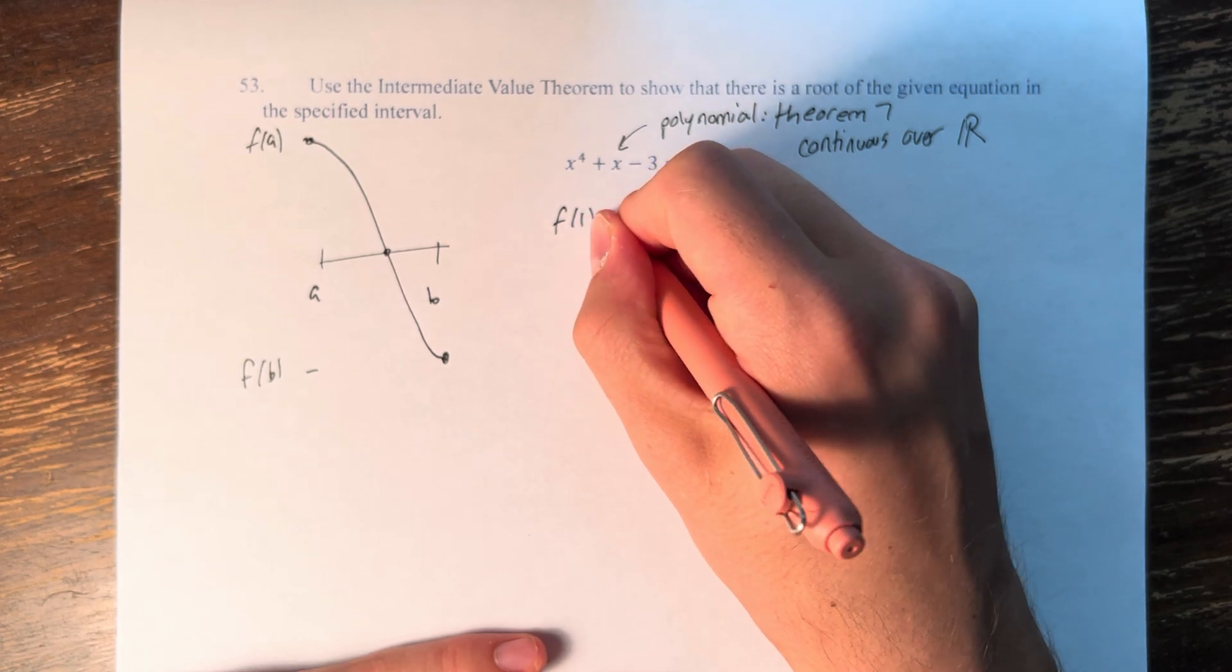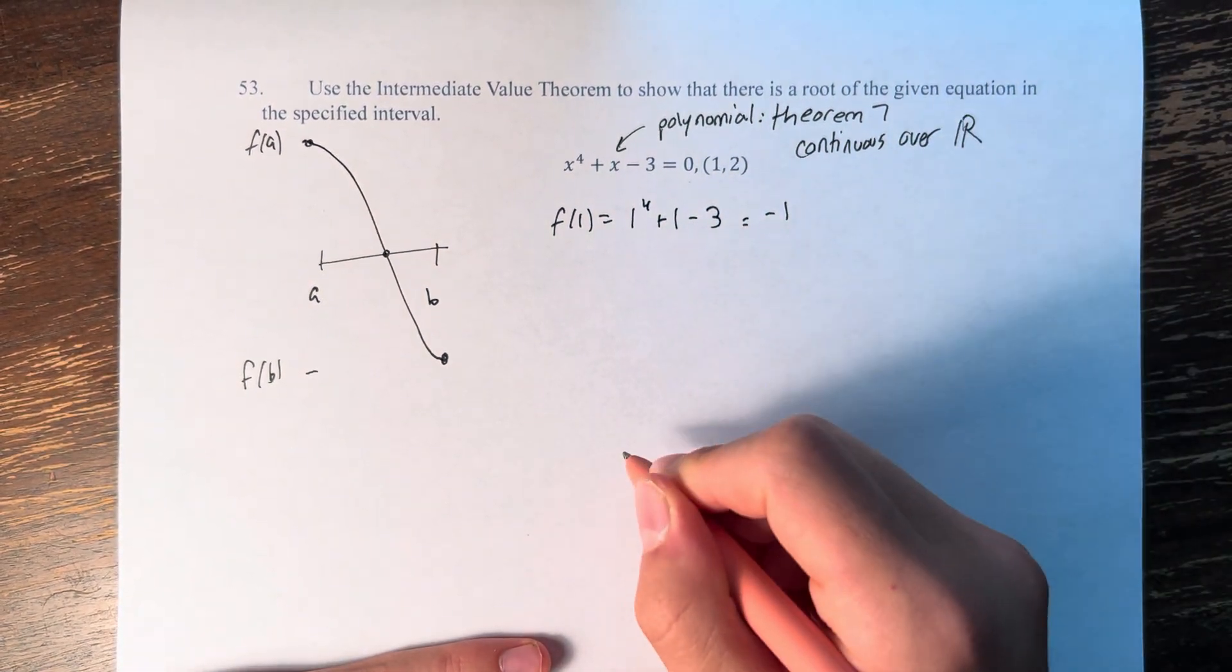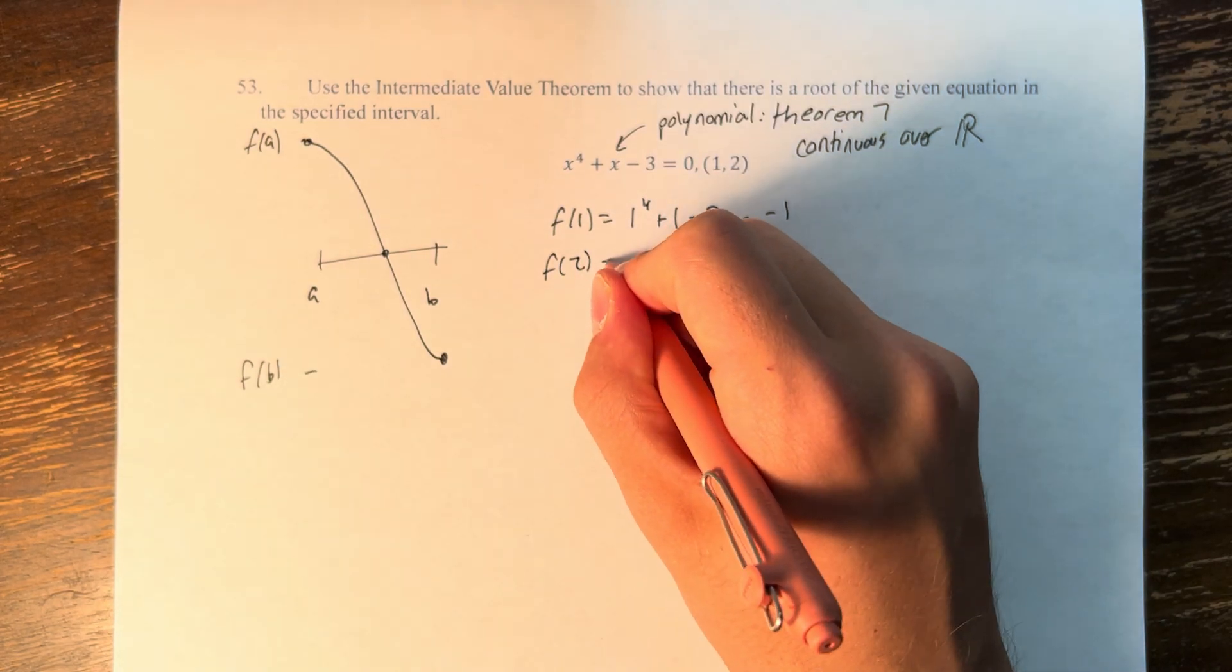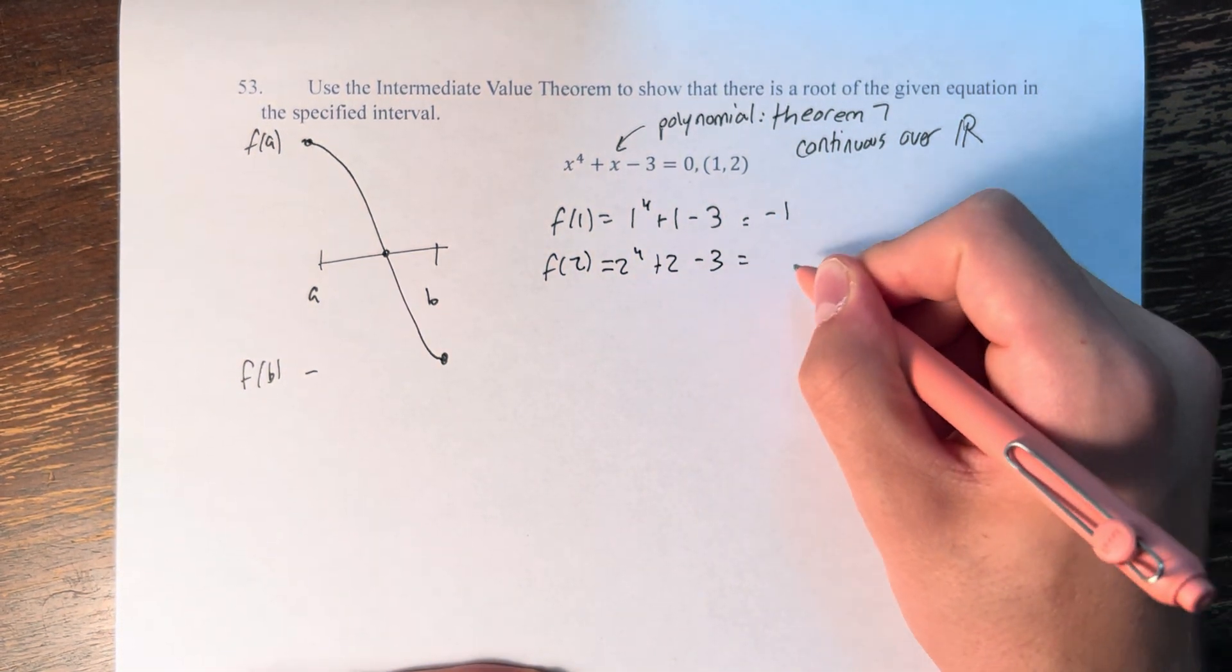So if f of 1 is equal to 1 to the fourth plus 1 minus 3, which is negative 1, and f of 2 is equal to 2 to the fourth plus 2 minus 3, which is 15,